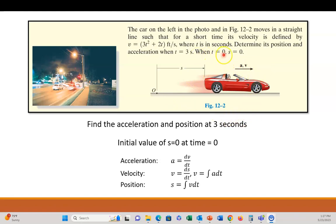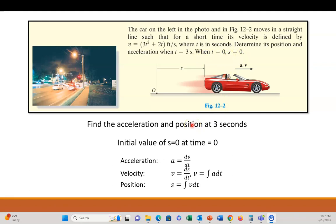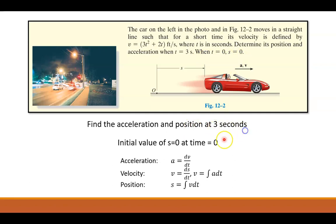When the time is 0 seconds, the displacement is 0. So here they have S for displacement, acceleration, and velocity of the vehicle. At the beginning of time, when they start the stopwatch, you're at a displacement of 0. Find the acceleration and the position at 3 seconds. They give you an initial value — that's S equals 0 at time 0. So that is the initial value.